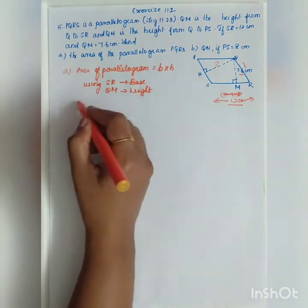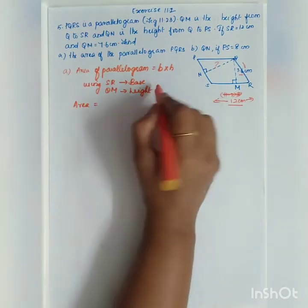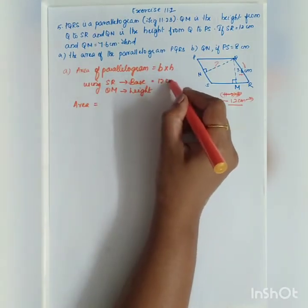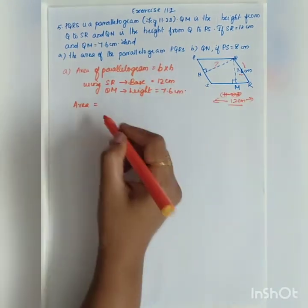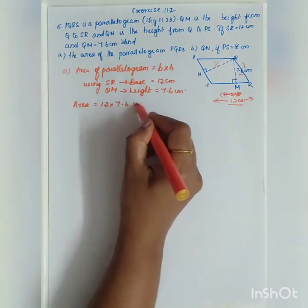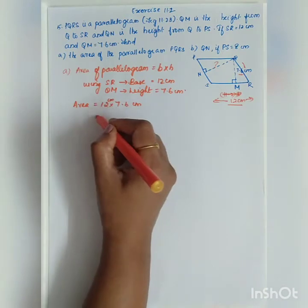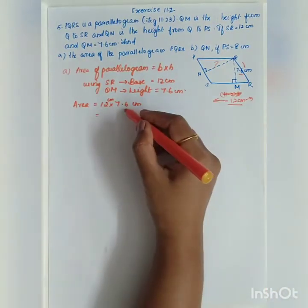What will be your formula? Area is equal to base, SR is equal to 12 cm, and height is equal to 7.6 cm. So area is equal to 12 into 7.6 cm. We will do normal multiplication. Here there is a decimal, right?